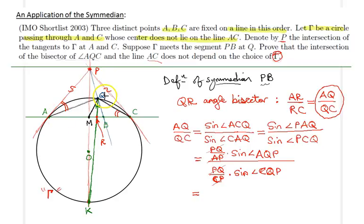Sine AQP is equal to sine AQB because they are supplementary angles. I will replace it with sine of angle AQB. In a similar way, sine CQP equals sine CQB because those two angles are supplementary as well.